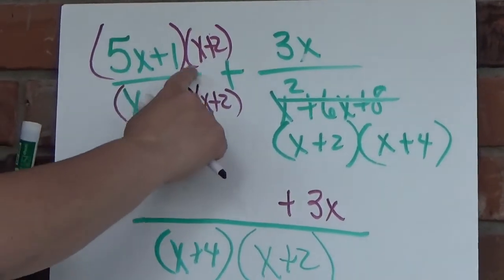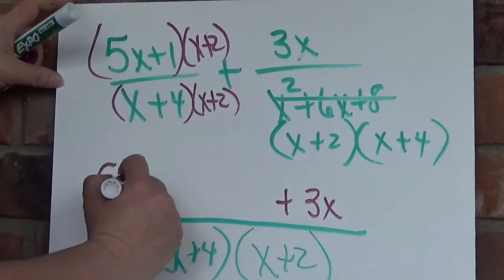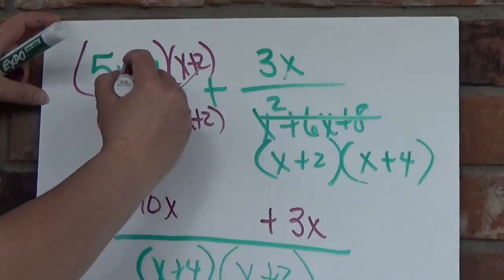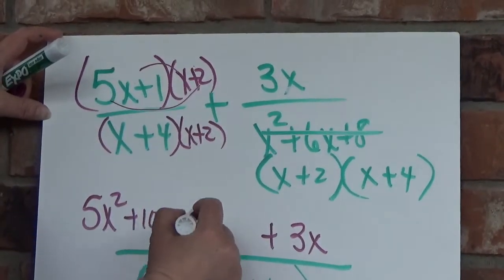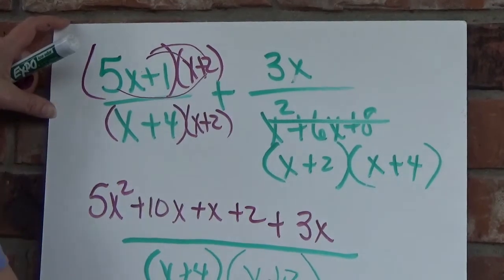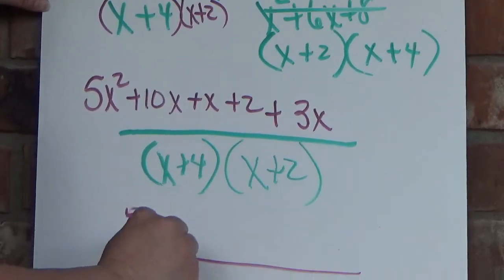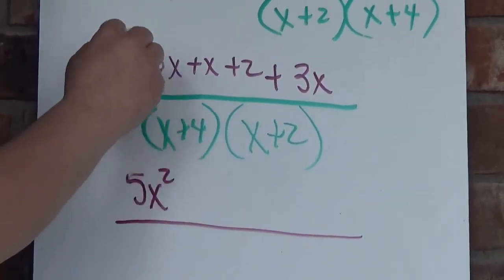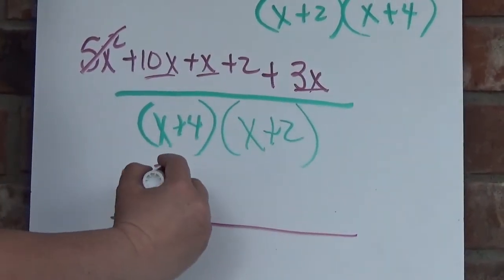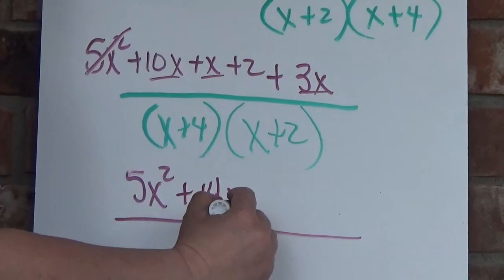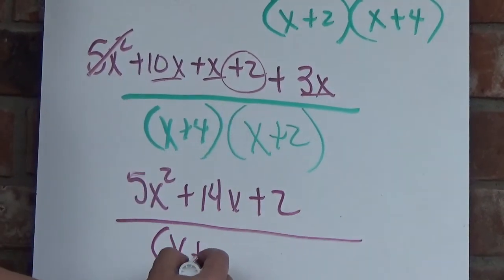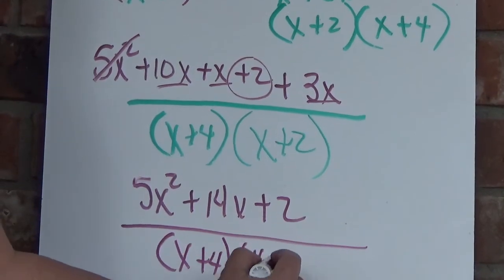But here I need to go ahead and double distribute. So I get 5x squared plus 10x plus x plus 2 plus 3x. So the answer is 5x squared plus 14x plus 2 over x plus 4 times x plus 2.